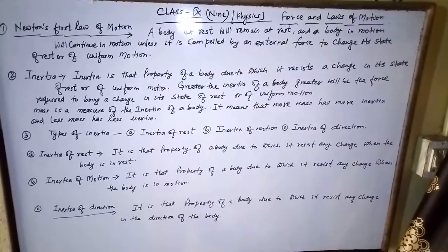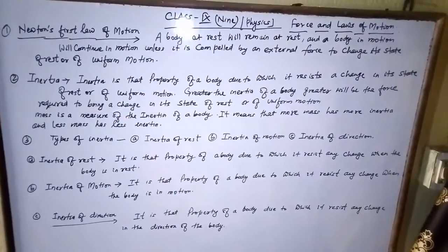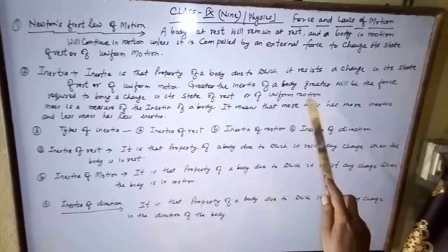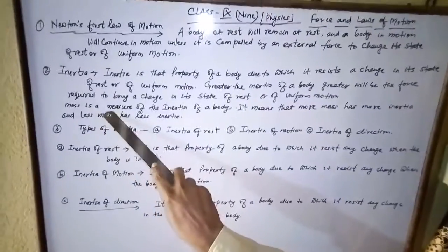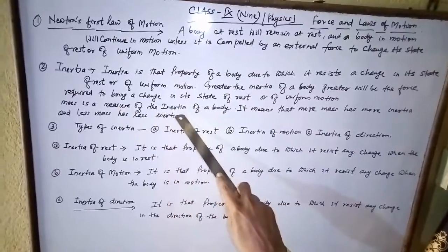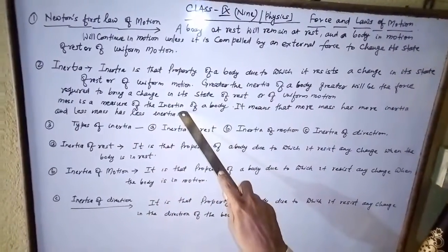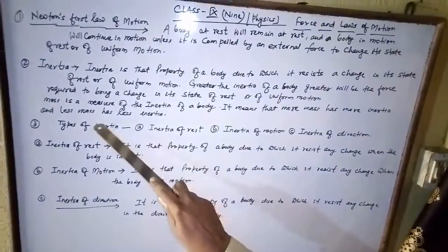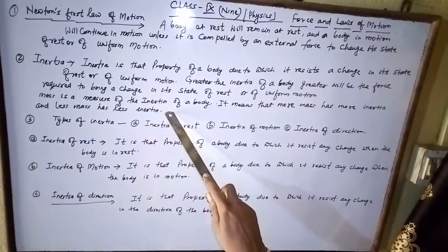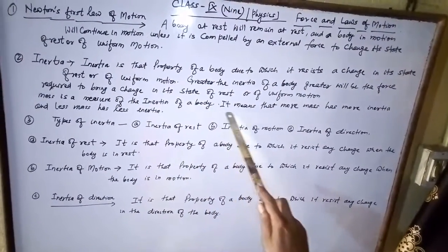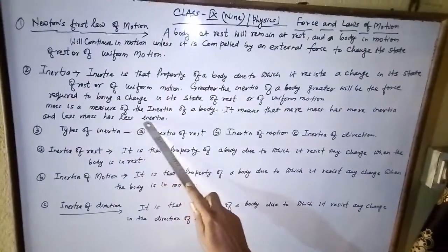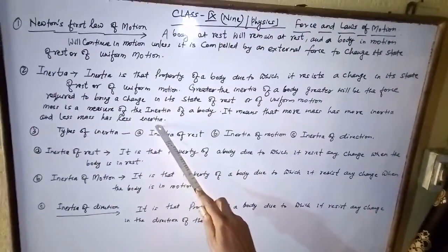The greater the inertia of the body, the greater the force required to change its state. Mass is also a measure of inertia — by the definition of inertia, mass is the measure of inertia of the body. This means more mass means more inertia, and less mass means less inertia.